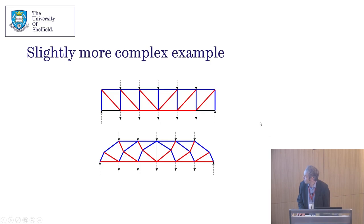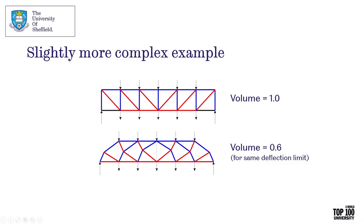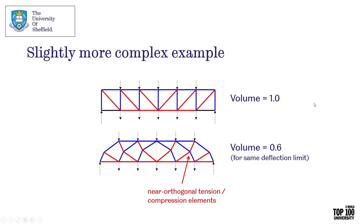In a more complex example, comparing a Pratt truss at the top with an optimized truss at the bottom, there are major savings by moving away from traditional 45-degree angles toward angles closer to 90 degrees. The optimized truss is only 60% of the volume of the Pratt truss for the same deflection limit — a spanning structure with a series of point loads between simple supports.